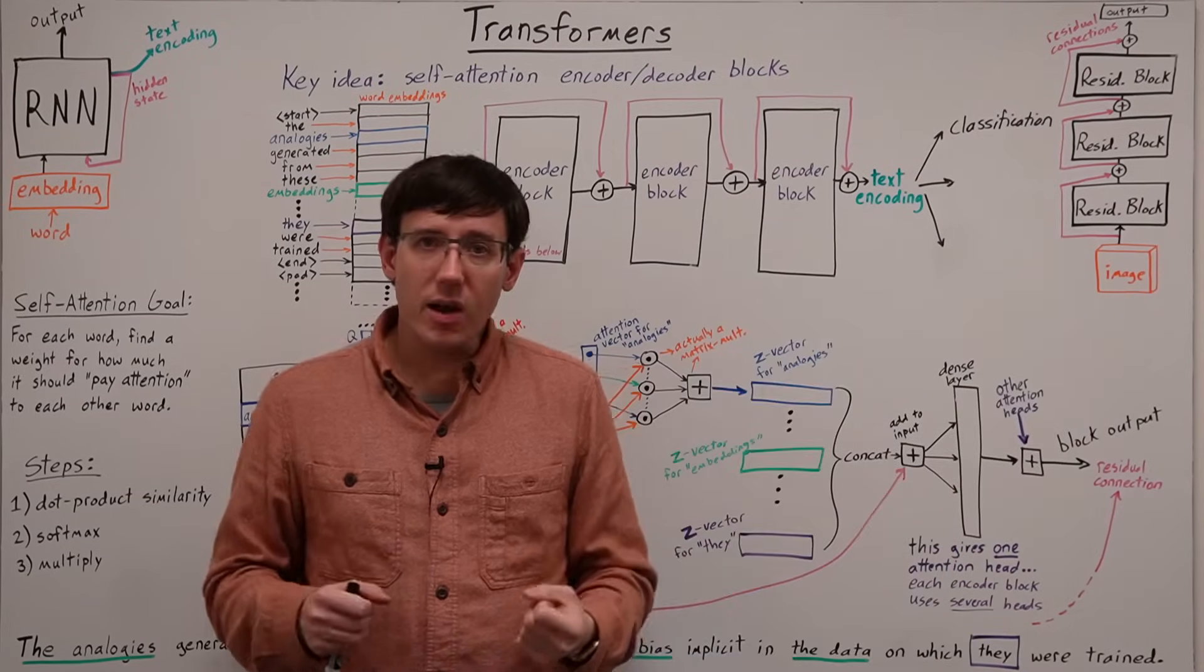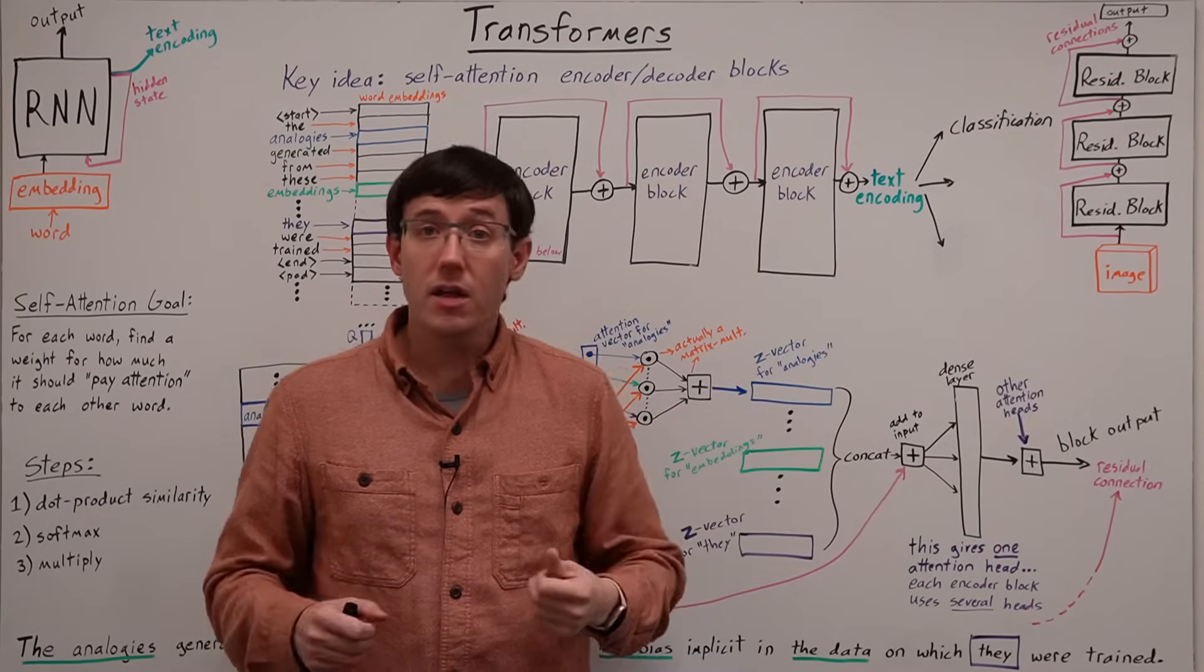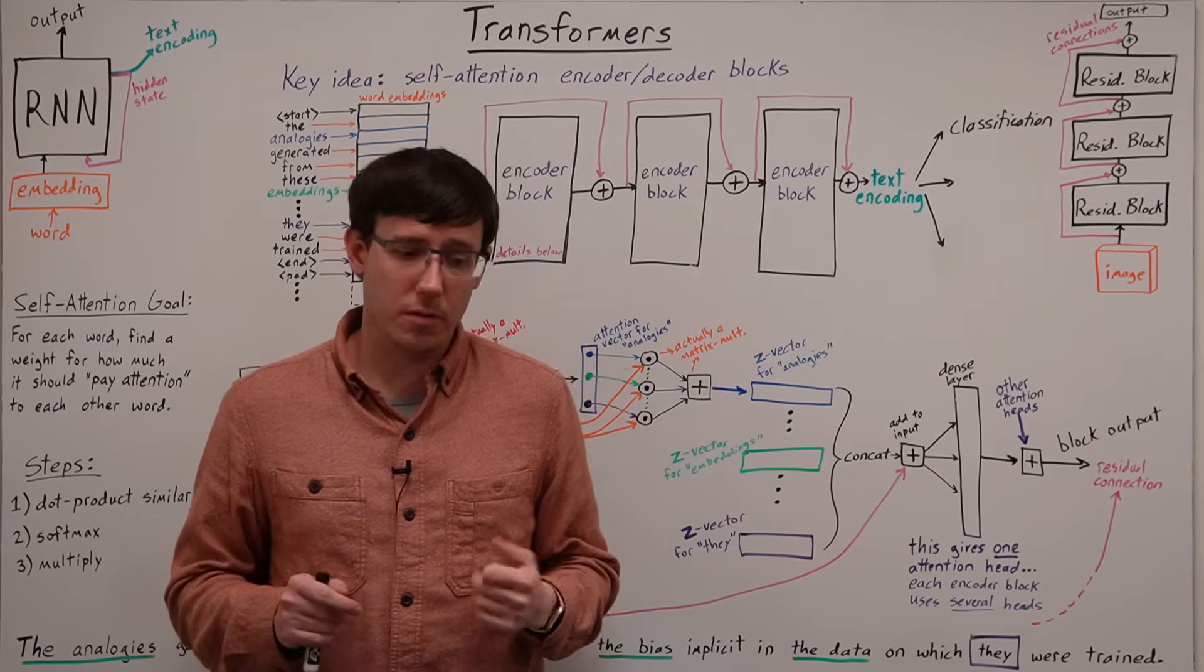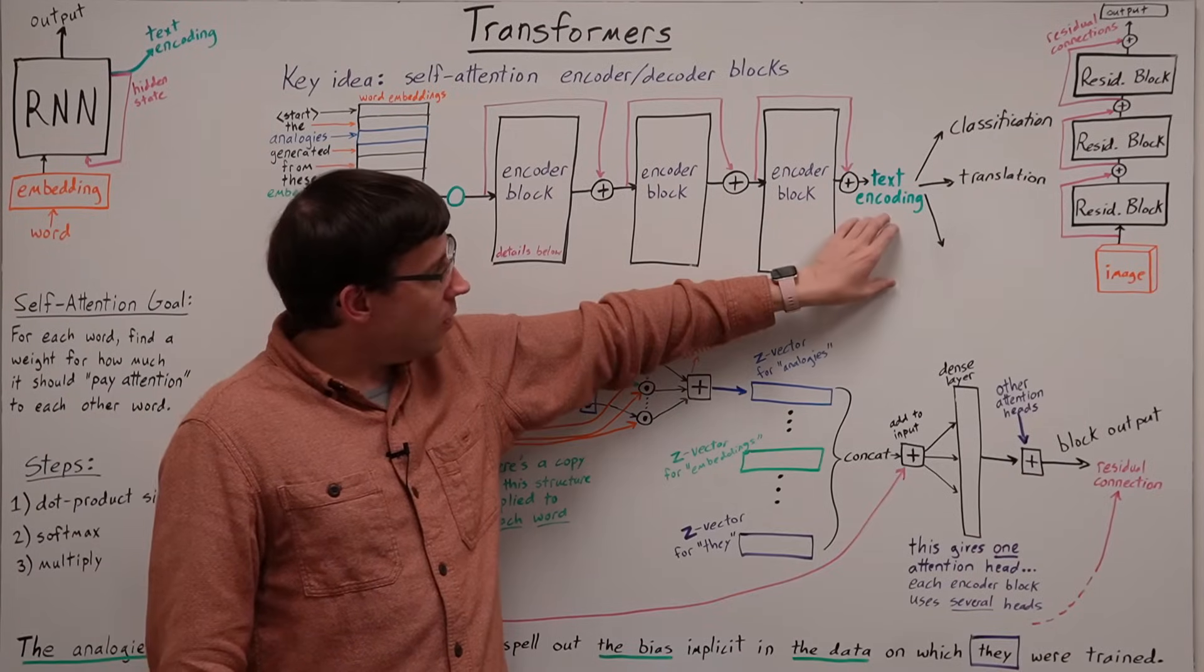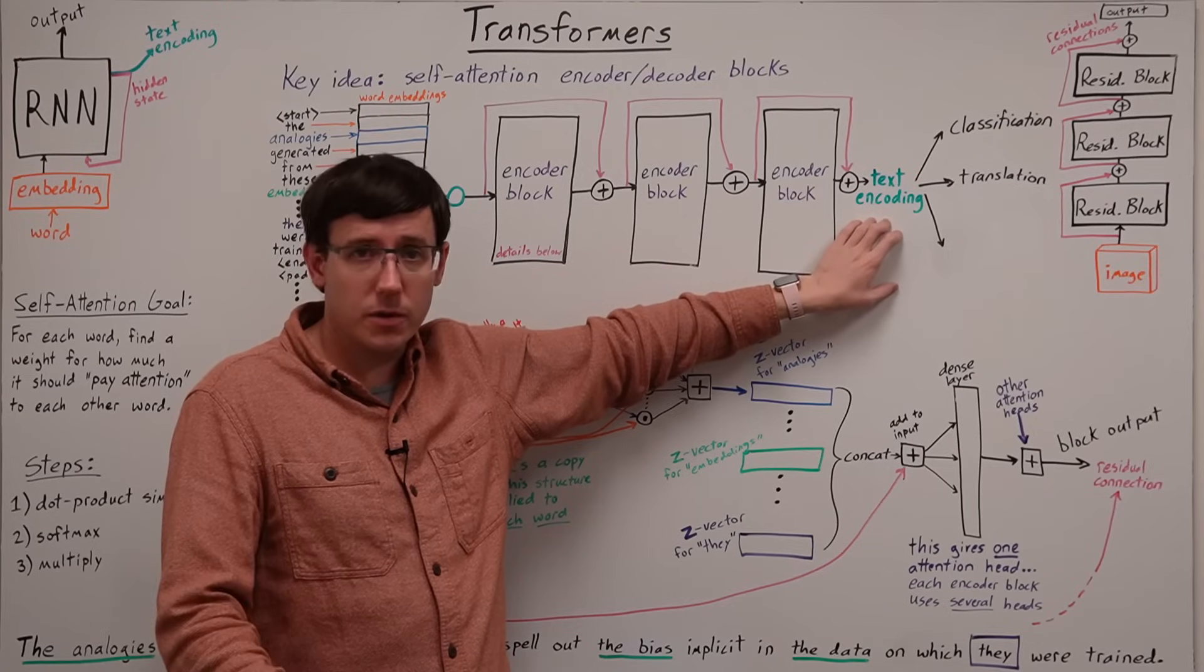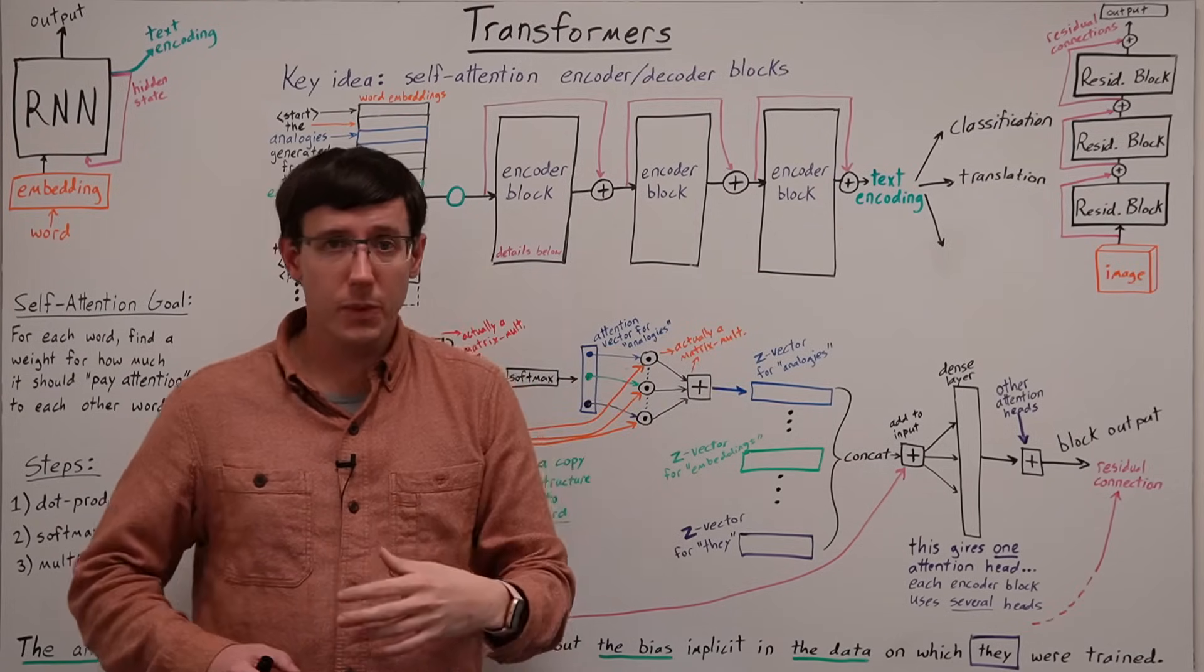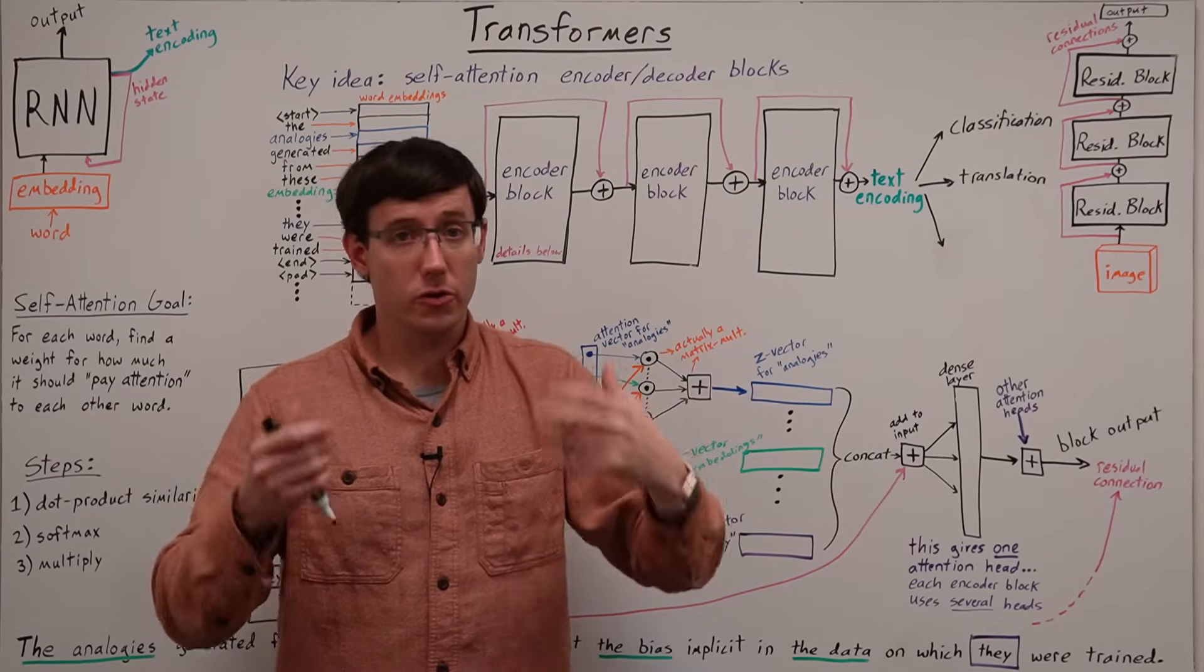But it turns out that this encoding often contains enough information that we can do way more, such as machine translation. If we use this network to produce an encoding of a document in English, and we want to translate that to some other language, we can use this encoding as the input to another neural network.